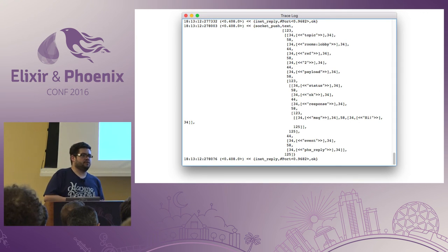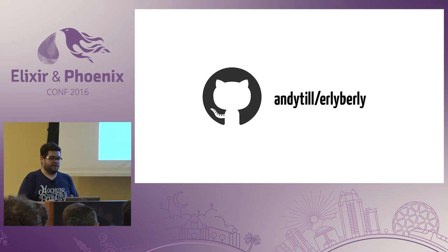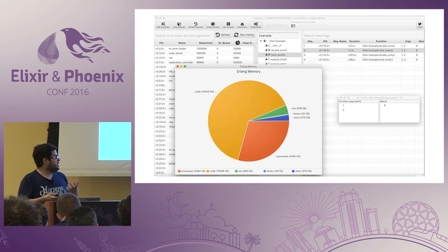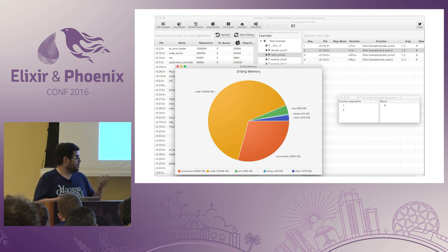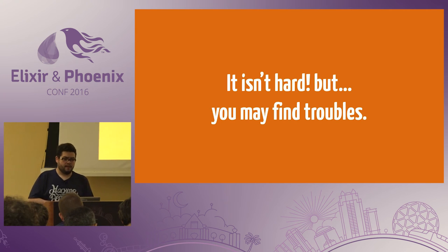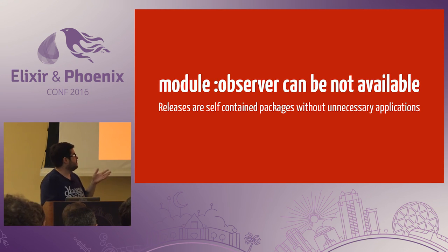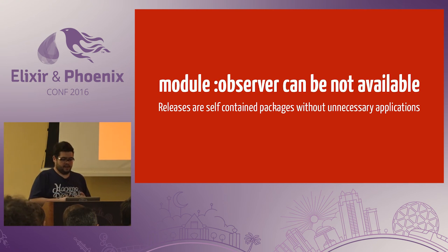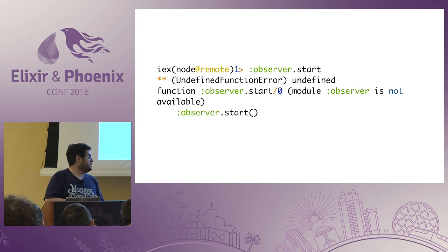Observer uses a lot of modules to show this information. So we have third-party applications — for example, everybody has access to simple system information, code checking, and tracing. You can use those too. And we saw how to use Observer in development. But we need to know how to connect to a remote node, and it isn't hard but you may find some troubles. My first trouble was that the observer module may not be available when you release your code in production — you create a self-contained package that strips all the unnecessary applications to make a smaller output.